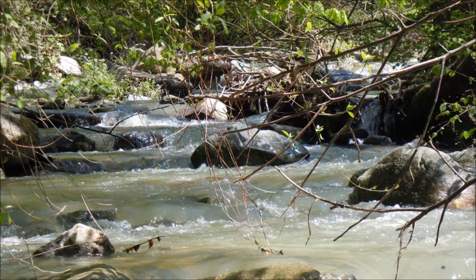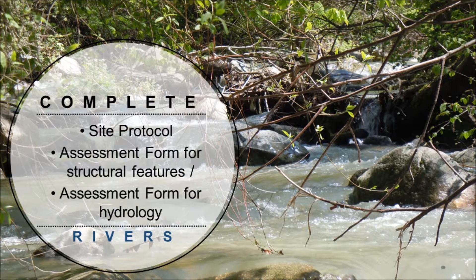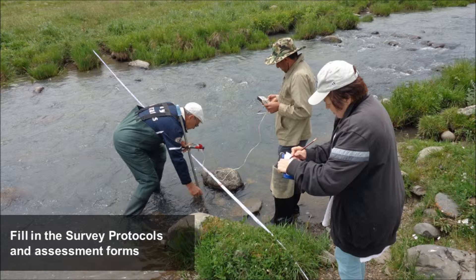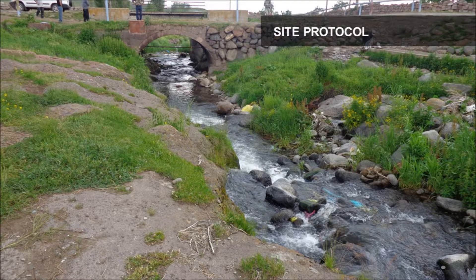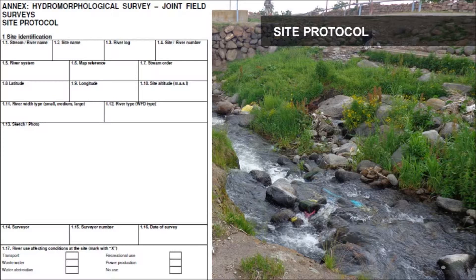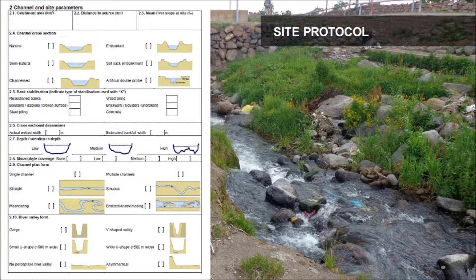Three survey forms must be completed for each river survey unit: one on site protocol, a second on structural features, and a third on hydrology. The purposes of the survey forms are to guide the collection of general data about the survey unit and survey site, carry out the hydrological regime assessment, and register longitudinal connectivity affected by artificial structures and morphology. A detailed guide for completing hydromorphological assessment protocols, including evaluation and scoring, can be found in the Water Quality Hydromorphological Survey Design Manual developed in the framework of the EPIRB project. The site protocol should contain a general description of the survey unit including the river's identifying features, present status, site and catchment attributes, a photo or sketch of the site, the name of the surveyor, the date of the survey, and information on channel and site parameters.